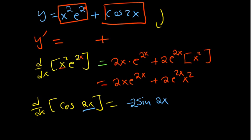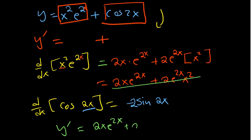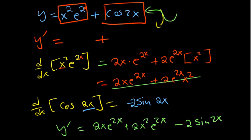To get the final result for y prime, we sum the two answers together. So y prime equals 2x times e to the power 2x plus 2x squared times e to the power 2x minus 2 sine 2x. That's the idea behind the sum and difference rule — it tells you that you can split the function, differentiate each part individually, and then add the derivatives together to get the overall derivative of y.